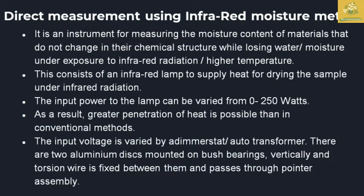The next direct method is the infrared moisture meter. This instrument measures moisture percentage using infrared radiation and high temperature, which causes water molecules in the sample to lose their structure. The instrument consists of an infrared lamp that provides steady heat for drying the sample. The input power of the lamp can be provided up to 0 to 250 watts, enabling great penetration of heat through the sample, allowing measurement of both wet and dry moisture percentage.